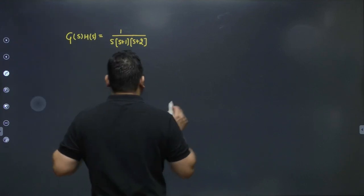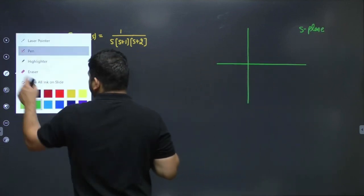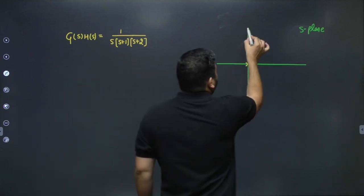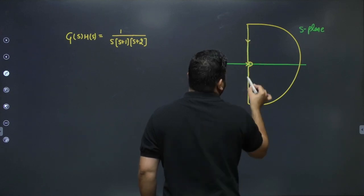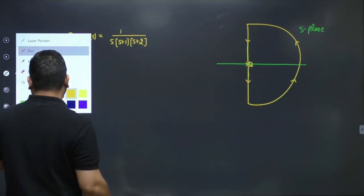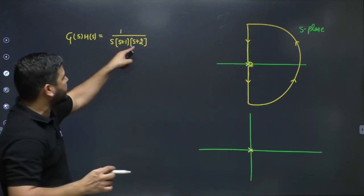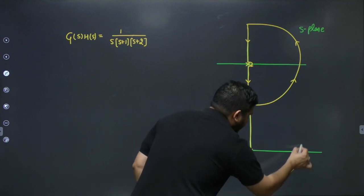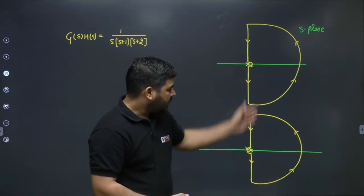To find the number of encirclements of minus one we need to draw the Nyquist plot. We take a right-half contour in the s-plane. There is one pole at the origin, so the contour can be taken in two ways: excluding the pole at the origin, or including the pole at the origin.